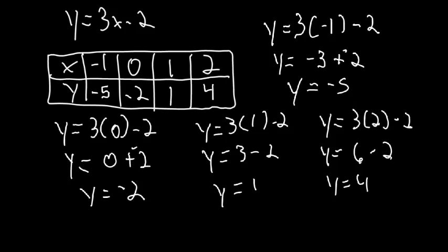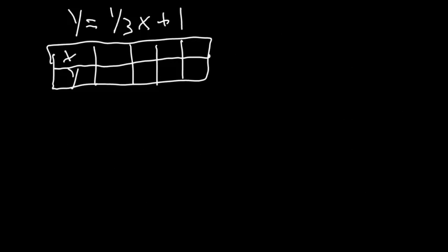The advantage of creating these tables yourself is that you get to pick the numbers. For this function y equals one-third x plus 1, since I'm dealing with a fraction of one-third, I'm going to pick multiples of three for my input, because one-third of a multiple of three gives a whole number.